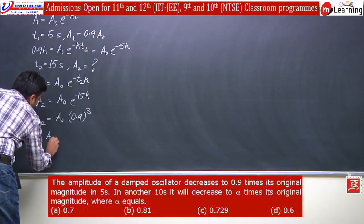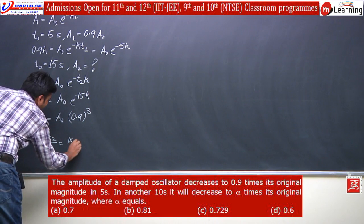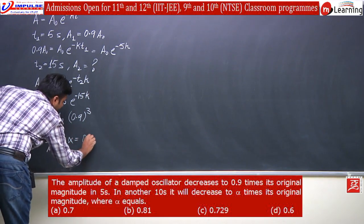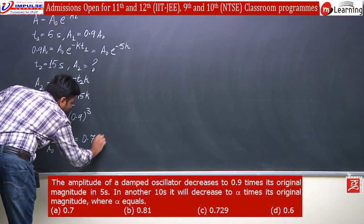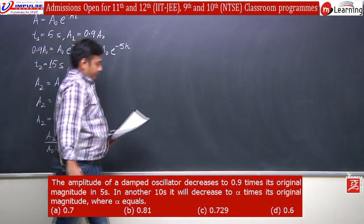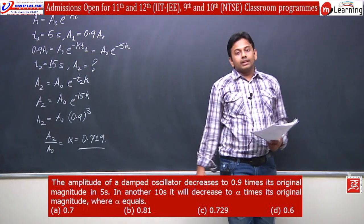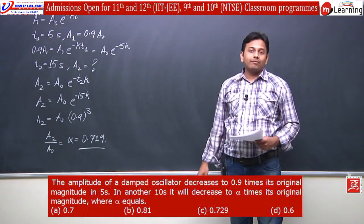From here, A2 upon A0, which is defined as alpha in the question, is equal to 0.729, which we can see in the options. And this is our final answer.